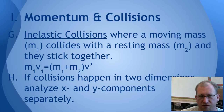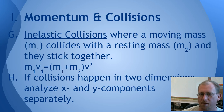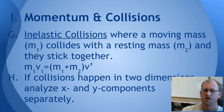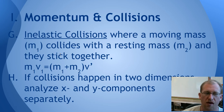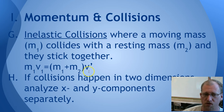For inelastic collisions — where not all kinetic energy can be found afterward — we use a different equation. Again, mass two is sitting still and mass one strikes it, but now they stick together. The equation is: m1 × v1 = (m1 + m2) × v', where v' is the resulting final velocity of the combined system.